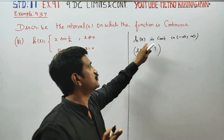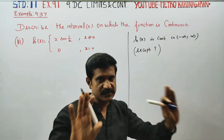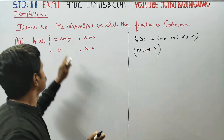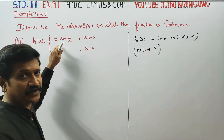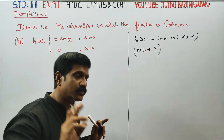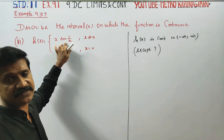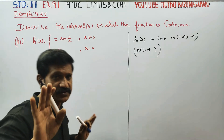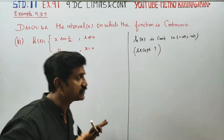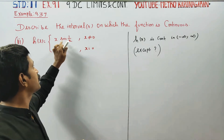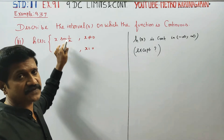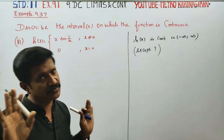h(x) is continuous. This is an algebraic function — always continuous. This is sine x, cos x — a trigonometric function — that is continuous. The multiplication of two continuous functions is always continuous.